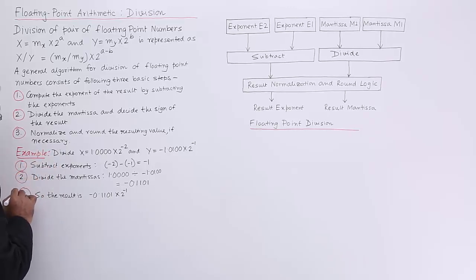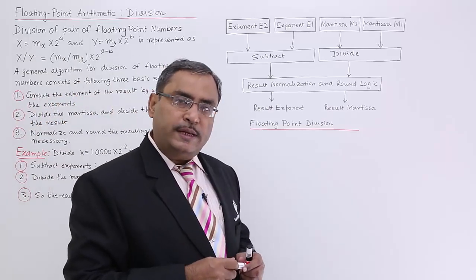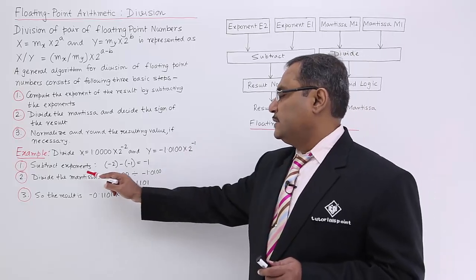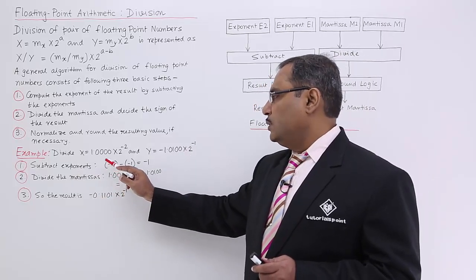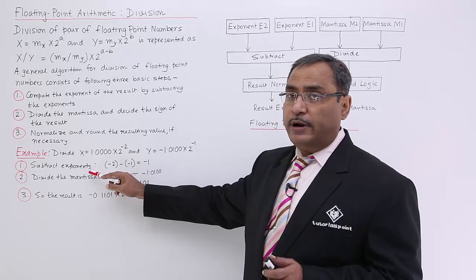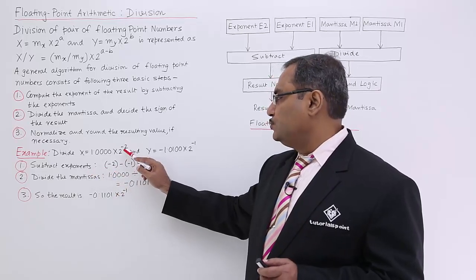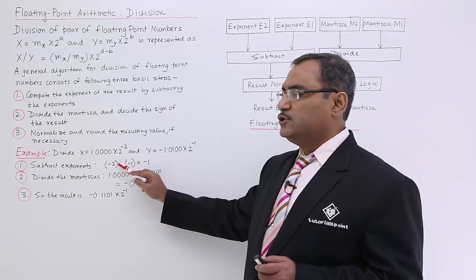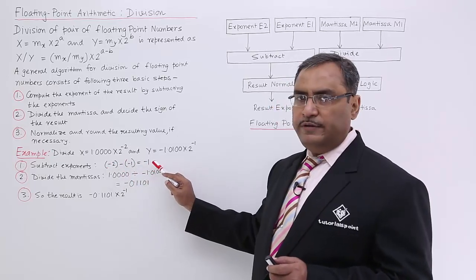In this example also, I have followed three steps. Divide x is equal to this and y is equal to this and subtract exponent. So now, what is the first step? That is subtract exponent. So minus 2 minus minus 1. So minus minus means plus. So minus 2 plus 1 means minus 1. Very obvious.